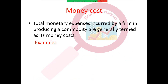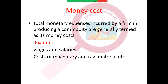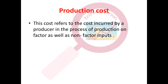First is money cost. What does money cost mean? It is simple — total monetary expenses incurred by a firm in producing a commodity are generally termed money cost. That is, all the payments made in the form of money to bring a product to the market, including the value of non-factor inputs. Next is production cost.